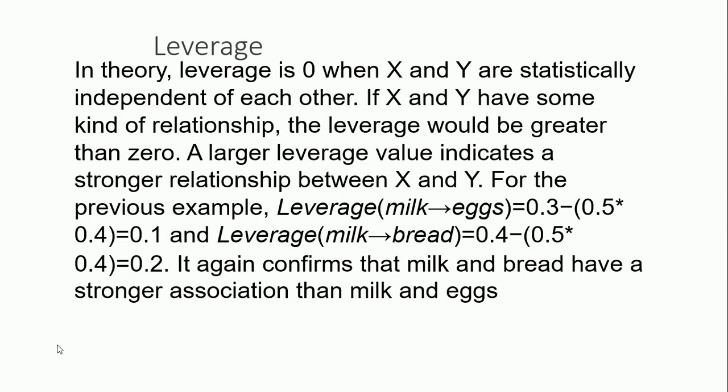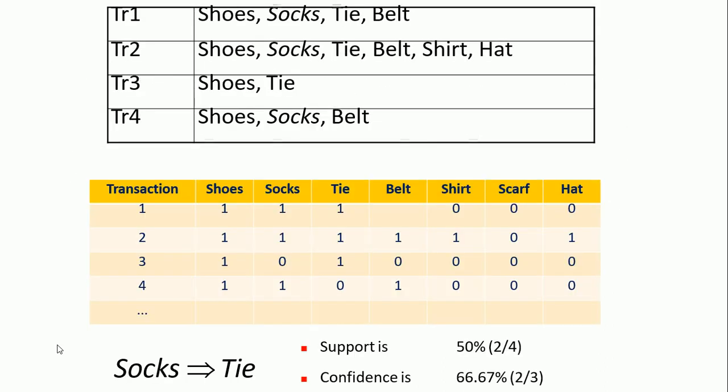The larger the leverage value, the stronger the relationship between X and Y. The formula is: leverage of X and Y equals support of X intersection Y minus support of X multiplied by support of Y. For the previous example, leverage of milk and eggs is 0.3 minus the product of their individual supports, giving 0.1, while leverage of milk and bread is 0.2 — confirming that milk and bread have a stronger association than milk and eggs.